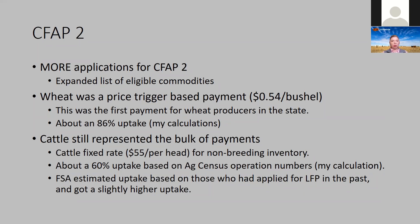Let's start with wheat. The price trigger-based payment was 54 cents per bushel. This was the first time wheat producers had had a payment under the CFAP program here in Oklahoma, because we have winter wheat. By my calculations, we had about 86% uptake, meaning that 86% of our wheat production for 2020 received a payment. That is a very good level of uptake for any kind of program. Obviously you're going to have some people who aren't eligible for other reasons, or who simply choose not to participate. But for any kind of program, nearly 90% — that's really good.